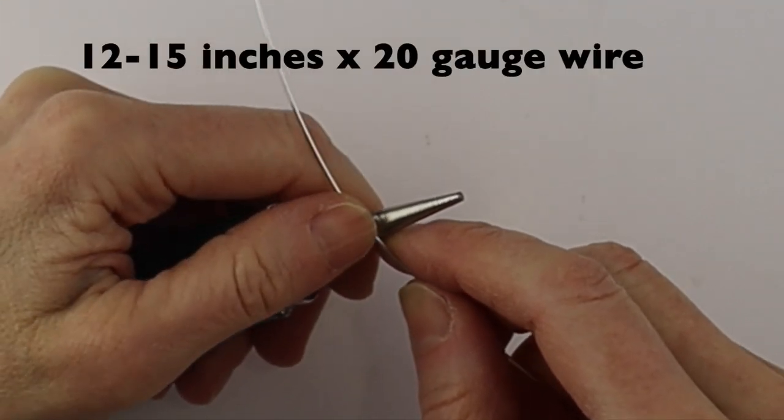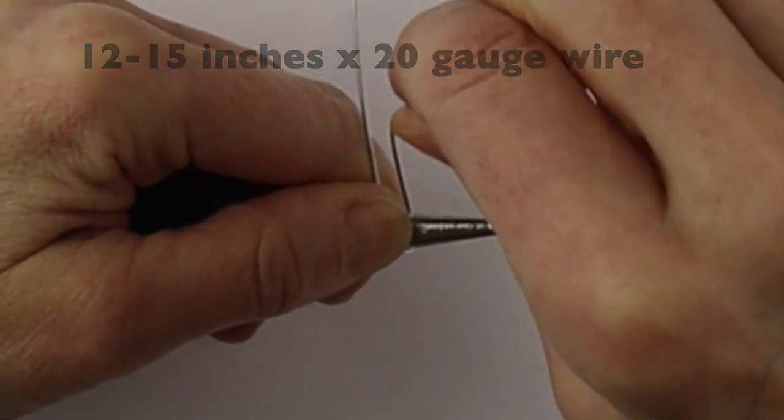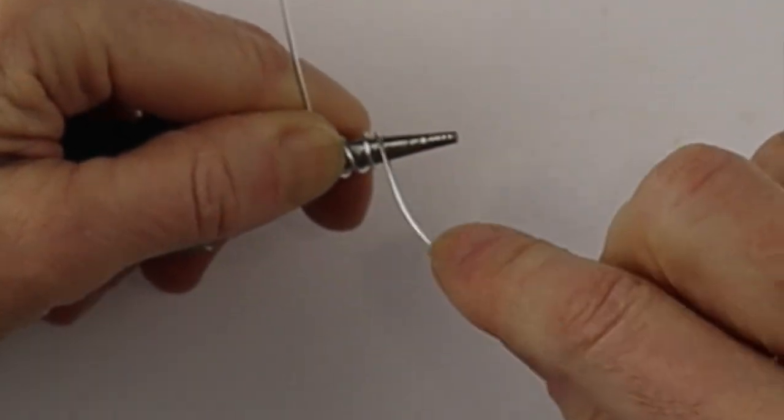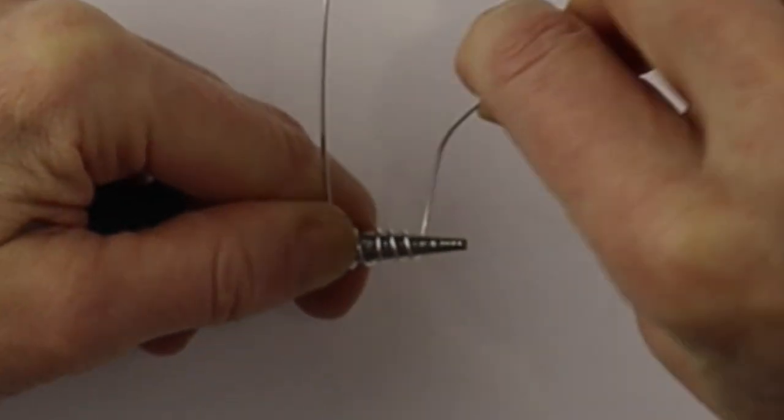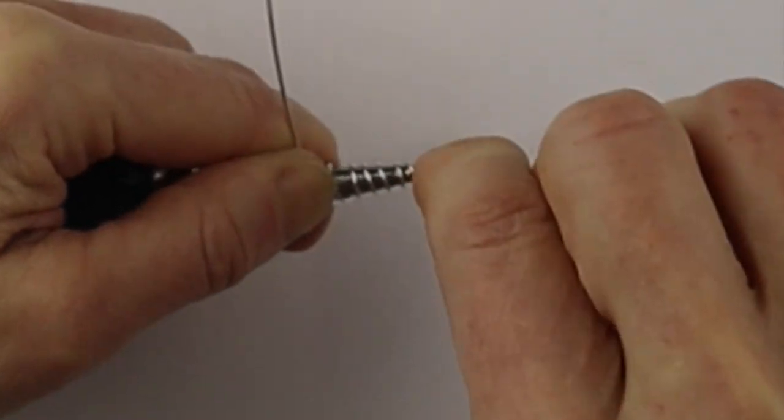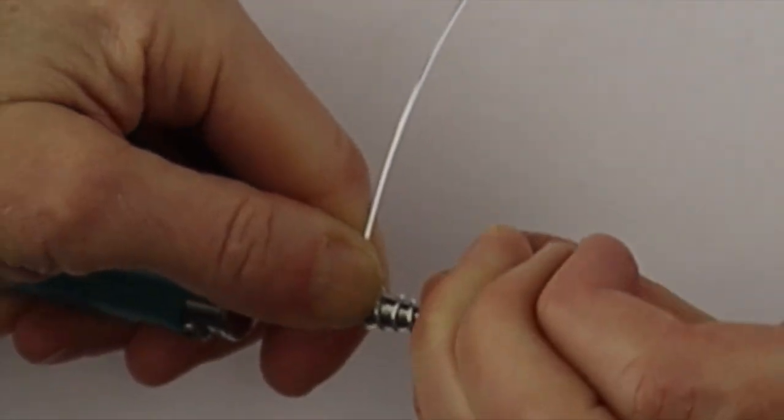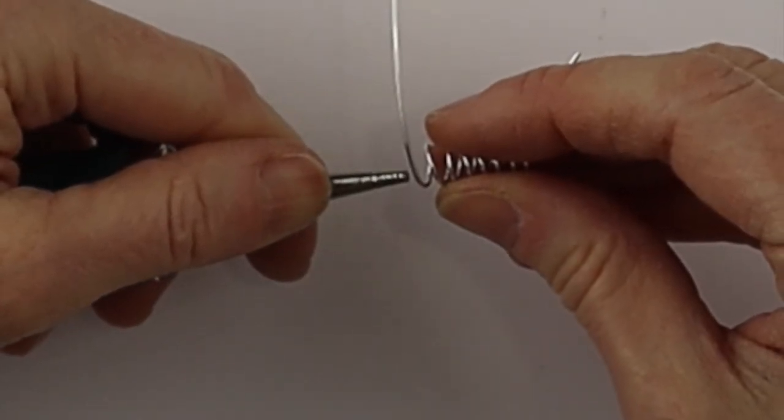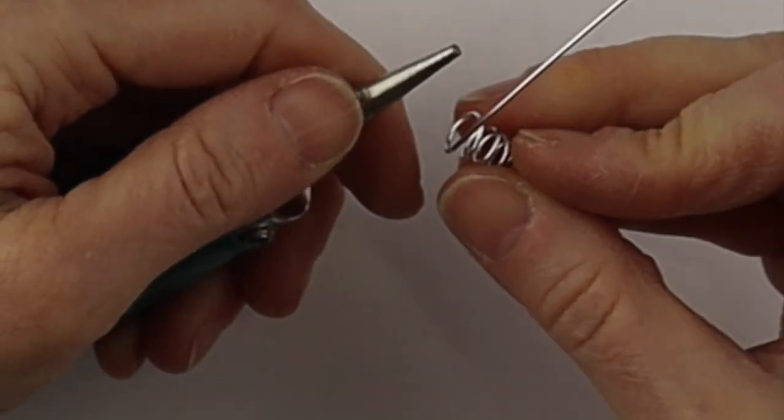This time we're starting with a longer wire. It's about 12 to 15 inches depending on how big you want the coils to be. So we're going to start in the center and wind the wire up about six, seven, eight times. Depends on how big you want that coil to be. Then we'll remove it from the bit.